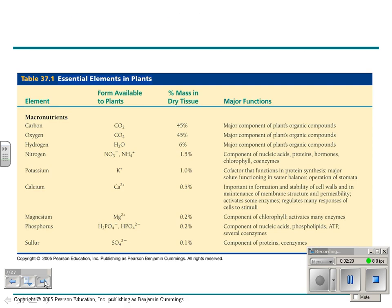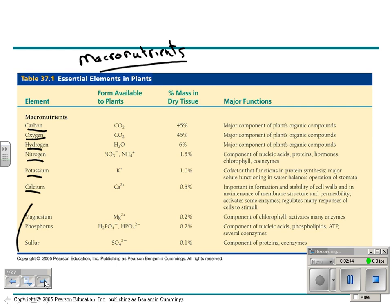Table 37.1 is an important one detailing the macronutrients in plants and what they do — obviously carbon, oxygen, hydrogen, nitrogen, potassium, calcium. These are called macronutrients. There are other nutrients considered micronutrients; you can look those up in Table 37.2 in your textbook. We're not going to talk about those very much in this class.